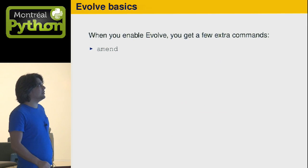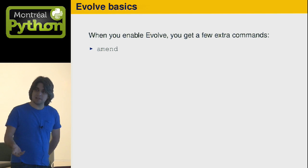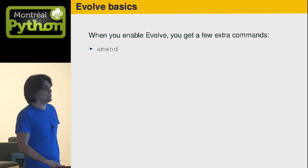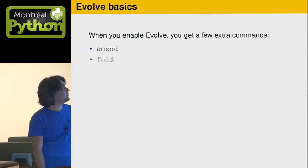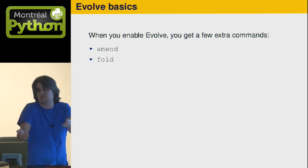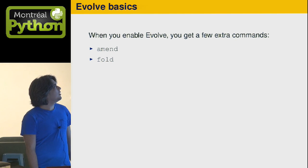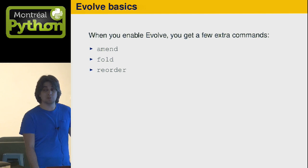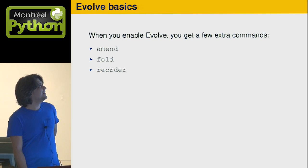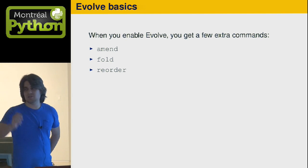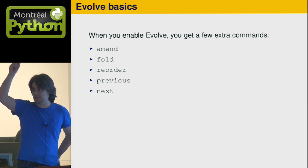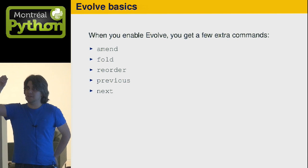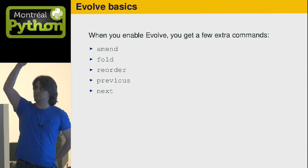When you enable evolve, you get a bunch more commands for editing your history. The first one is amend, which amends a single commit. Next we have fold, also known as a squash — it puts two commits together. We also have reorder; I'm working on this one and it's almost there — it just reorders commits. Previous and next are for moving on the graph, on the DAG — the directed acyclic graph — so you go to the previous or next commit.